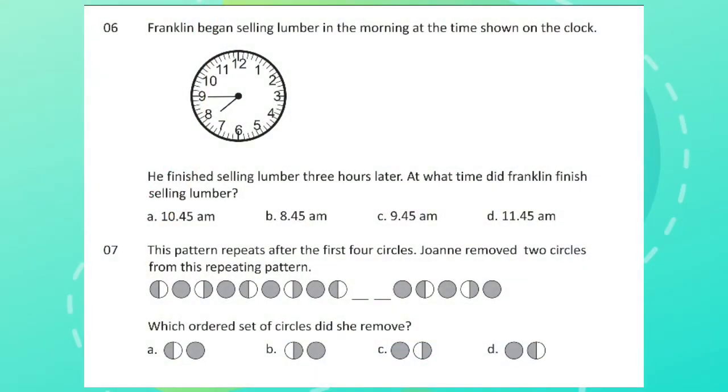Question 6: Franklin began selling lumber in the morning at the time shown in the clock. He finished selling lumber three hours later. At what time did Franklin finish selling lumber?